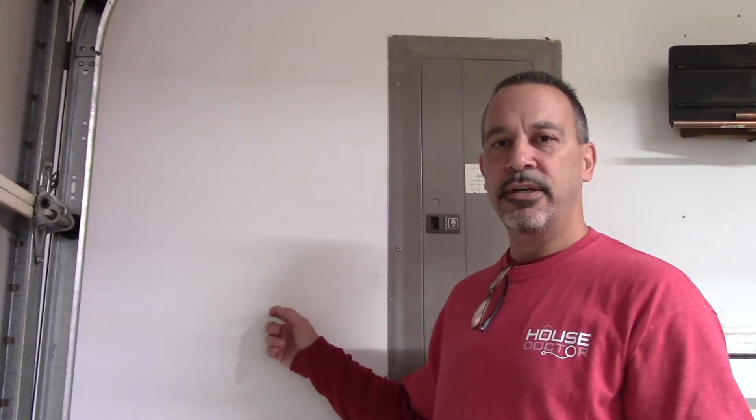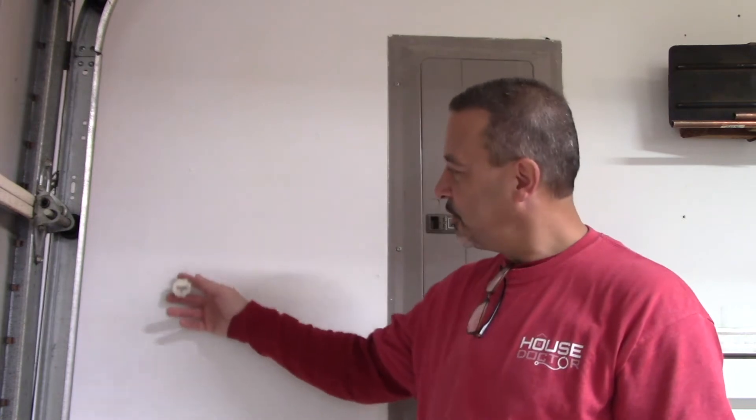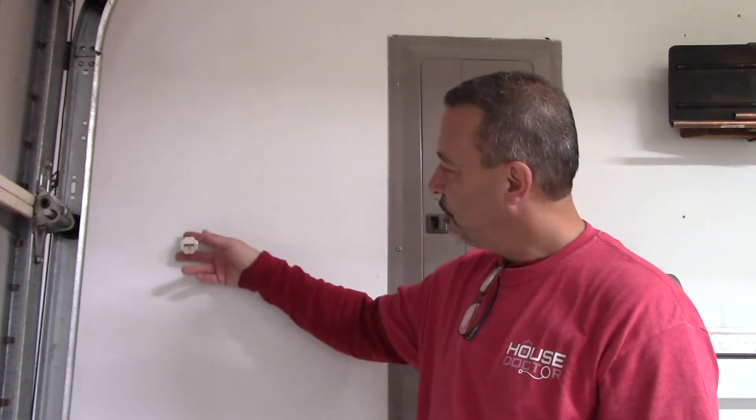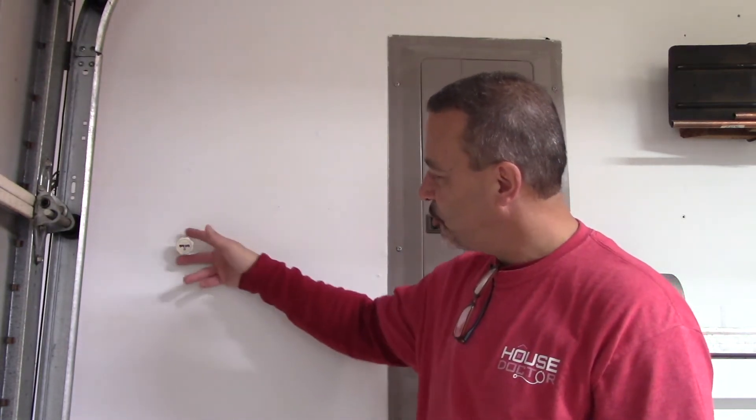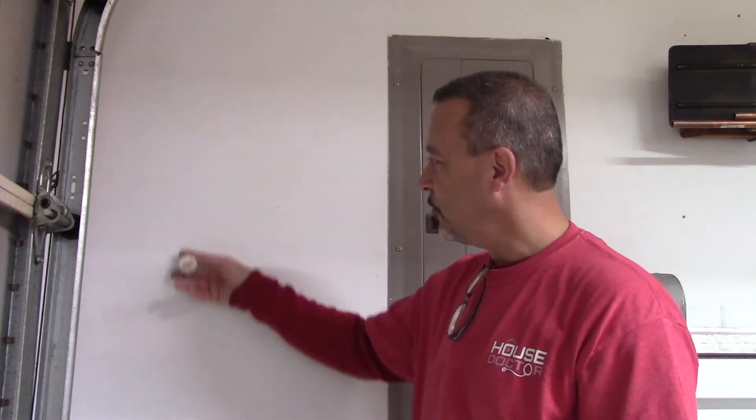Since this wall is so thick, a regular stud finder is not really going to work. That's why I normally just use one of these. It's a toddler lock. It's magnetic. You run it along the wall until you find a screw, and then you're pretty sure you're going to have a stud there. It'll just stick to the wall where the screw is.